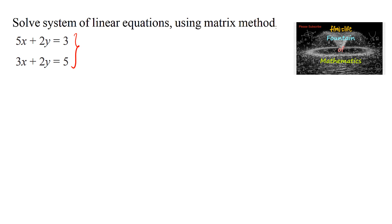The given system we can write by taking coefficients 5, 2, 3, and 2 as one matrix. The variable matrix x and y as a column matrix is equal to constants 3 and 5 as a column matrix, which are in the form of A into X equals B.